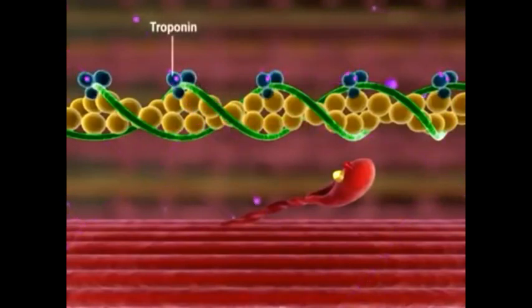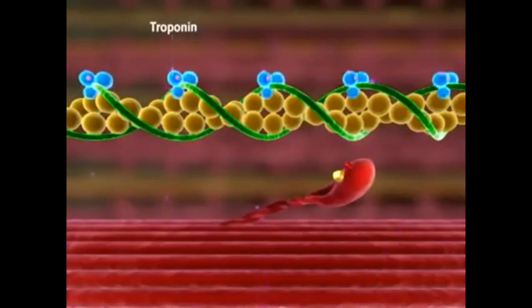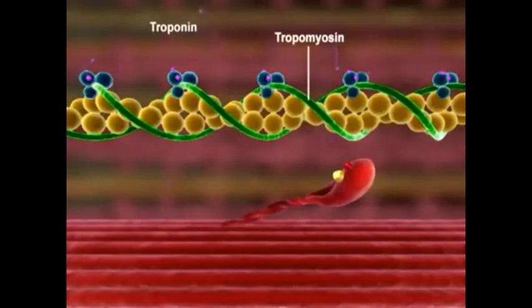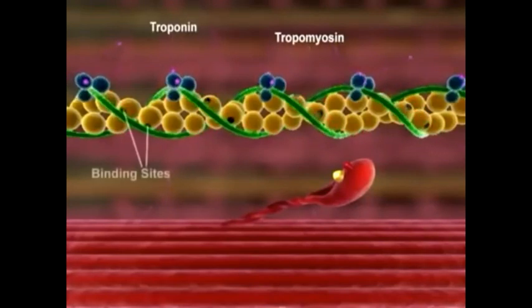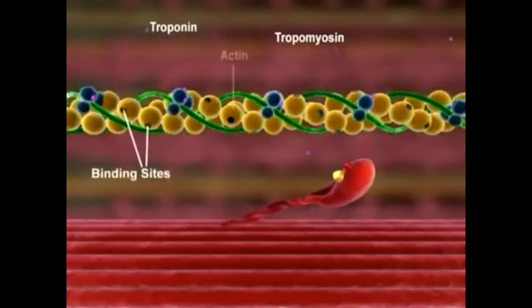Tropomyosin moves away from the myosin binding site on actin, allowing the myosin head to bind to actin and form a cross-bridge.